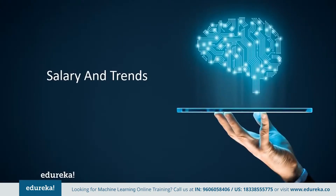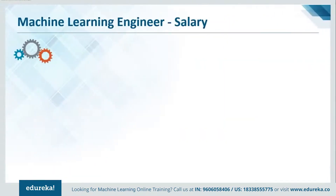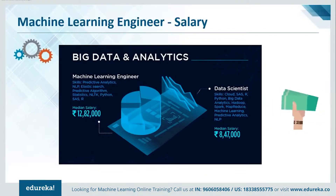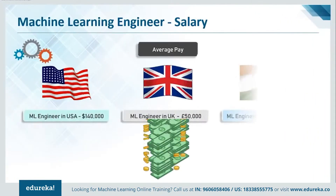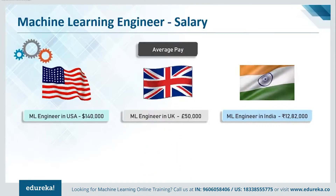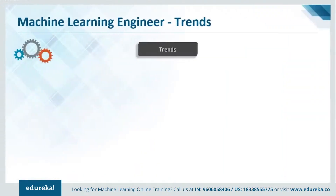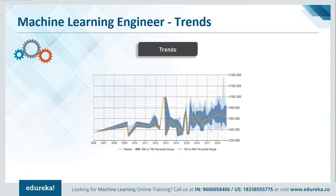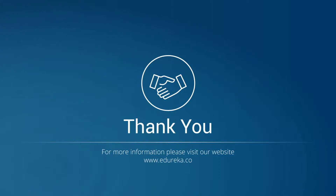Salaries and trends — as a fresher, there is a median salary of almost 13 lakhs and rising for a machine learning engineer. This is one of the trendiest and coolest jobs to have as per a survey conducted earlier this year. A machine learning engineer in the USA gets an annual pay of about $140,000, about £50,000 in the United Kingdom, and about 13 lakhs in rupees in India. The opportunities are endless — your value as a machine learning engineer will keep on increasing. That's it for this session — I hope you took away some real good points and that this helped you in your machine learning path.